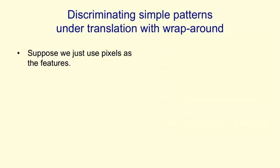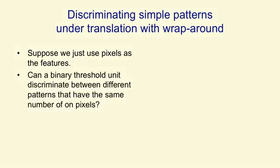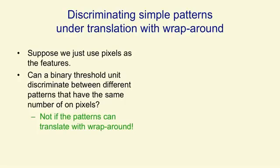An even more devastating example for perceptrons, because it's much more general, is when we try to discriminate simple patterns that retain their identity when you translate them with wraparound. The idea is that we want to recognise a pattern even when it's translated. Suppose we just use pixels as the features. The question is: can a binary threshold unit discriminate between two different patterns — one positive, others negative — if they've got the same number of pixels? The answer is no: it can't discriminate two patterns with the same number of pixels if that discrimination has to work under translation with wraparound.